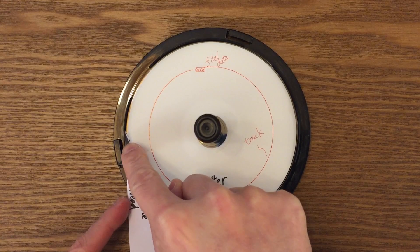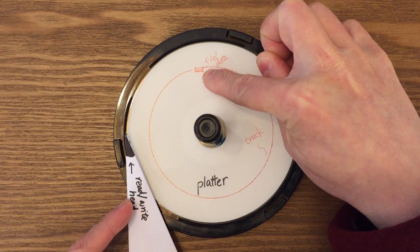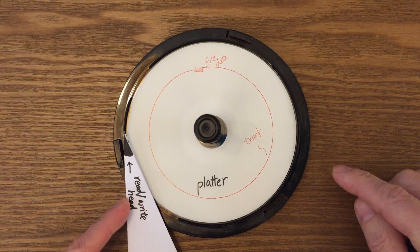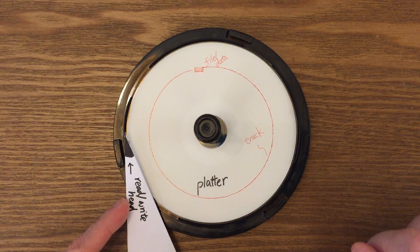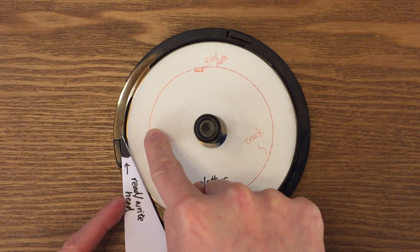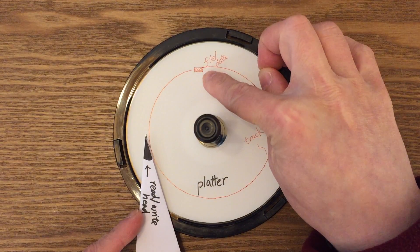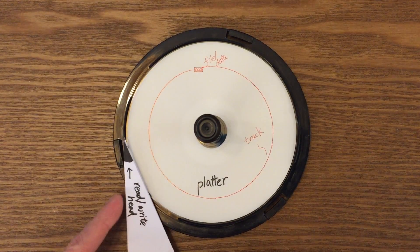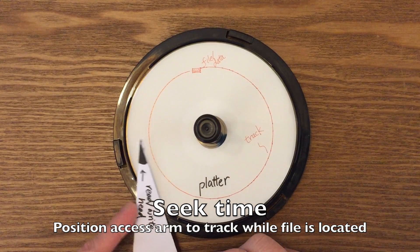Let's say the access arm is originally in this position and the file to be read is right here. The access arm needs to do two things or two movements. First of all, it has to move from here to the same track as the file or the data. This time is called the seek time.